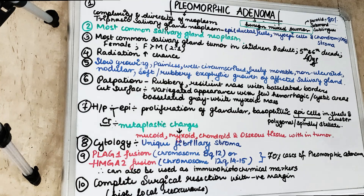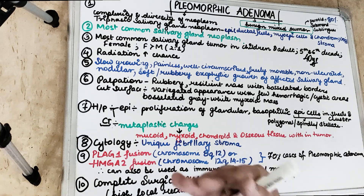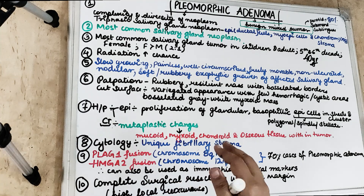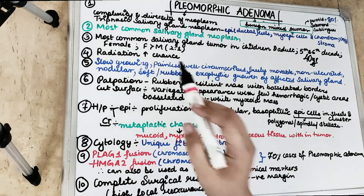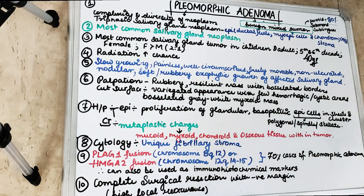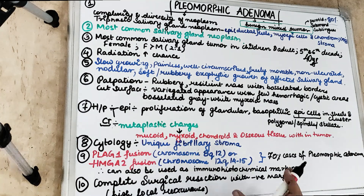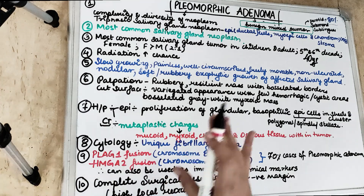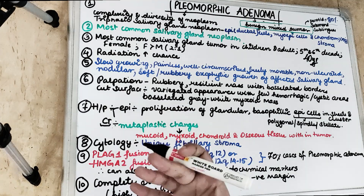What causes pleomorphic adenoma? Radiation is a key cause. If a patient has already undergone radiation exposure due to trauma or previous cancer, that can lead to pleomorphic adenoma. Radiation increases the chances by making SNI cells more fibrous when the salivary gland is exposed. Pleomorphic adenoma is the most common salivary gland neoplasm and can occur in any age group. It is usually a solitary lesion — multiple lesions are rarely seen.